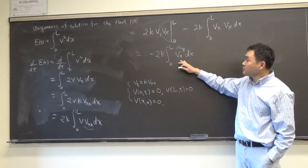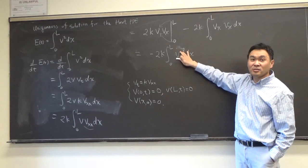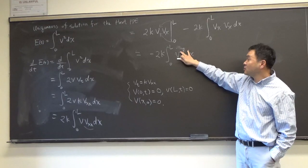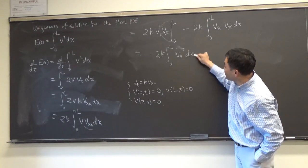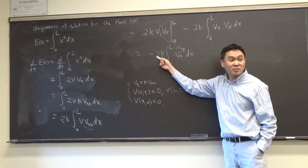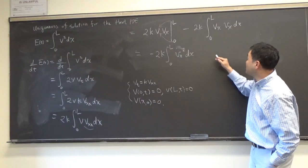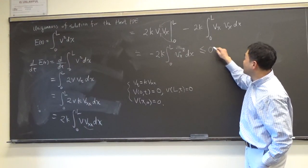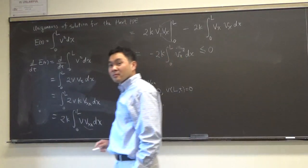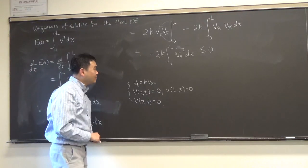So, you have this. And, now, here's the thing. v_x squared is something that's non-negative, right? So, this is a non-negative quantity, and it has a negative sign in front. K is always positive, right? So, that means that this is a quantity that's non-negative. Agree? Now, let's think about what E(0) is.